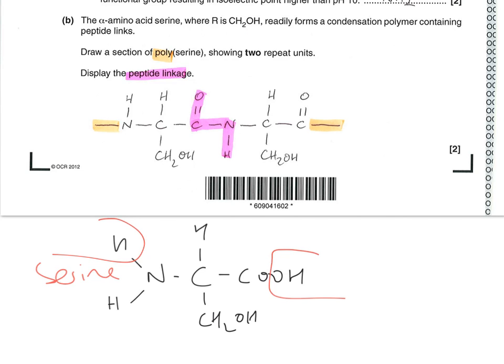We end up with a polymer chain like this, with two repeat units — there's one there, and there's the other one. Make sure you remember your end bonds, as that gets across the idea that it's a polymer. The peptide linkage is this C=O bond or NH group.